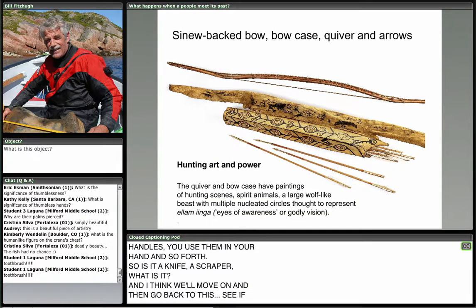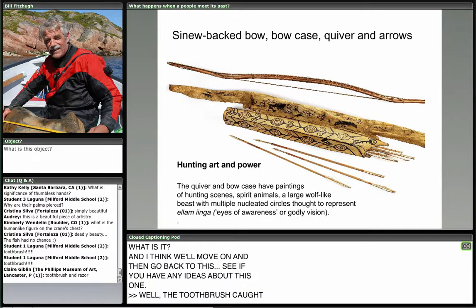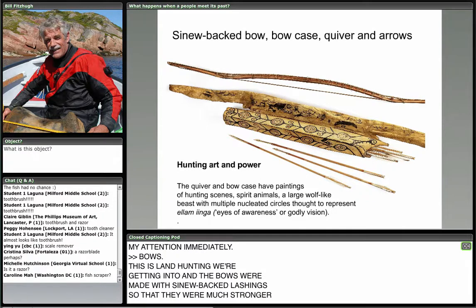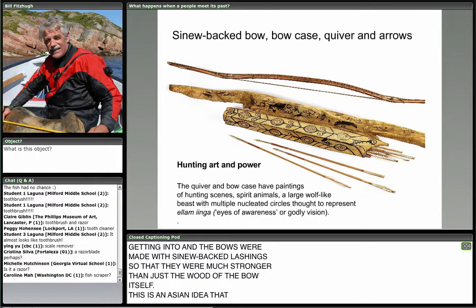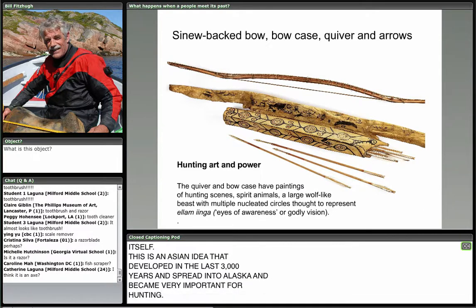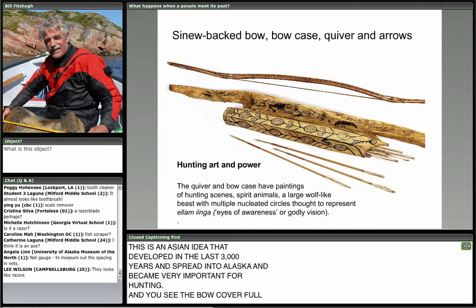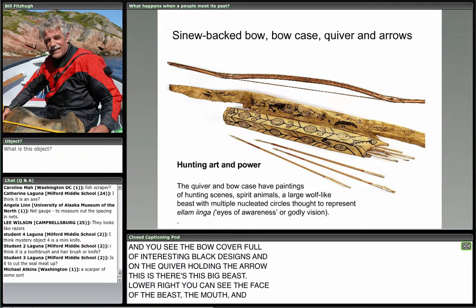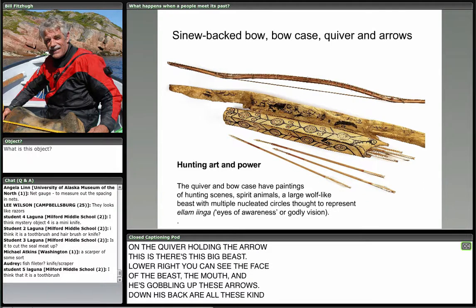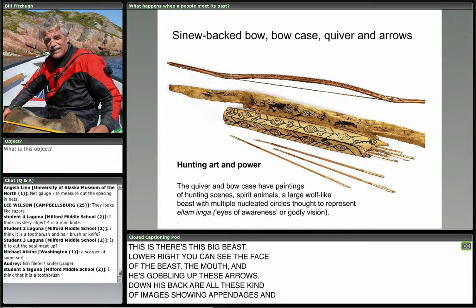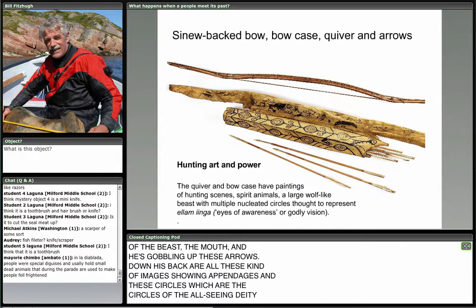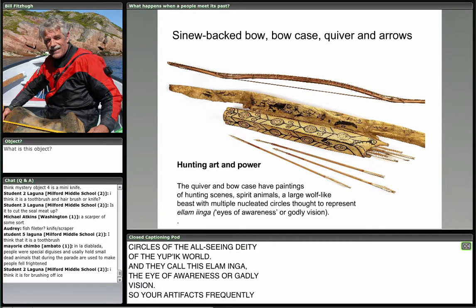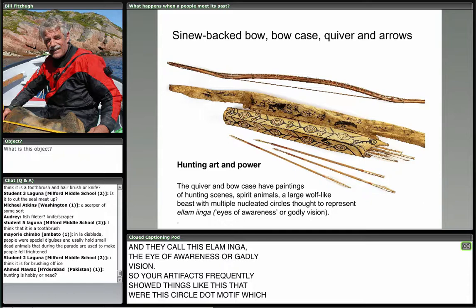The toothbrush caught my attention immediately! Now we're getting into land hunting. Bows were made with sinew-backed lashings, making them much stronger than just the wood alone — an Asian idea that developed in the last 3,000 years and spread into Alaska. You see the bow cover full of interesting black designs. On the quiver holding the arrows, there's a big beast — on the lower right you can see the face of the beast, its mouth gobbling up these arrows. Down its back are images with appendages and circles, which are the circles of the all-seeing deity of the Yupik world — they call this Elam Inga, the eye of awareness or godly vision. This circle-dot motif is very important in their iconography, giving power to land hunting as well as sea hunting.